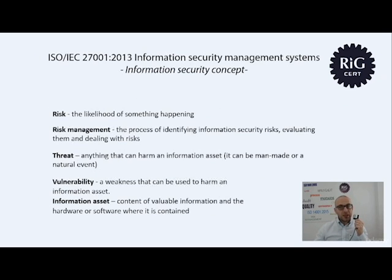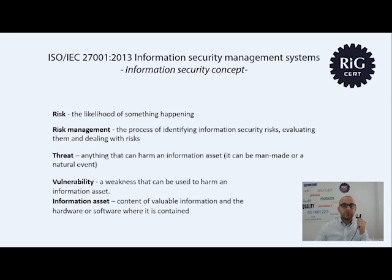Now, some other concepts and definitions that we will use during the course. Risk is the likelihood of something happening. Risk management is a process to identify information security risks, evaluate them, and deal with them. A threat is anything that can harm an information asset — it can be man-made or represent a natural event. A vulnerability is a weakness that can be used to harm an information asset. And an information asset is the content of valuable information and the hardware or software where it is contained — its container. Those are the most important concepts and definitions we will use throughout the course.